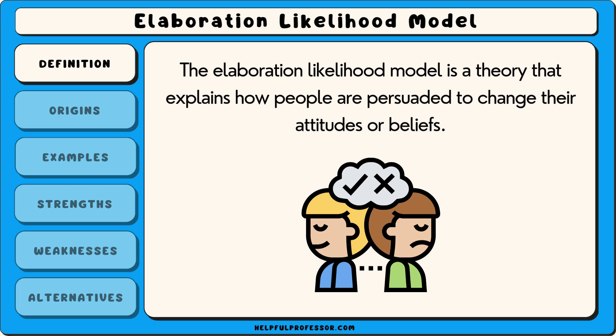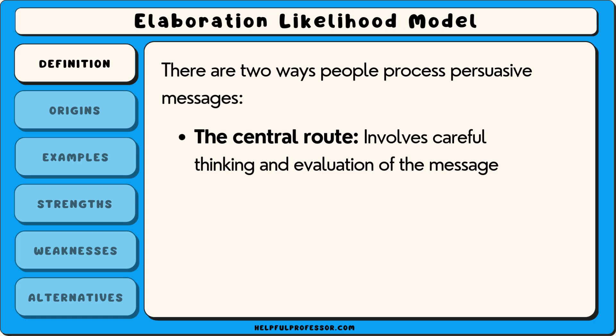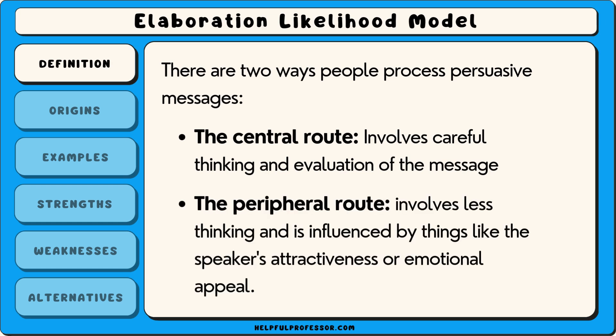The elaboration likelihood model is a theory that explains how people are persuaded to change their attitudes or beliefs. It suggests that there are two ways people process persuasive messages: the central route, which involves careful thinking and evaluation of the message, and the peripheral route.